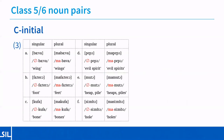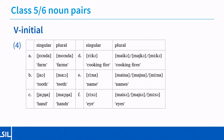Here are some consonant-initial class five and six noun pairs from my wordlist recordings. We have 'bava'/'mabava', 'fartaro'/'mafartaro', 'kufa'/'makufa', and so on. It's fairly clear that we have a pattern of a zero prefix in class five and 'ma-' in class six.